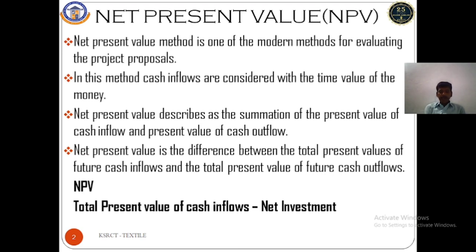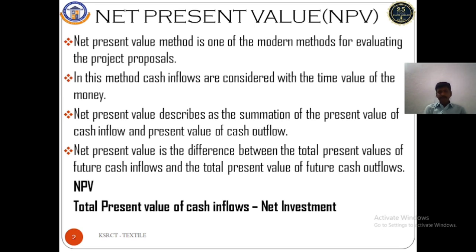Net Present Value is one of the modern methods for evaluating project proposals under capital budgeting. In this method, cash inflows are considered with the time value of money — that is the key difference between the traditional method and the modern method. NPV describes the difference between the total present value of future cash inflows and the total present value of future cash outflows. The formula is: NPV = Total Present Value of Cash Inflows minus Net Investment.